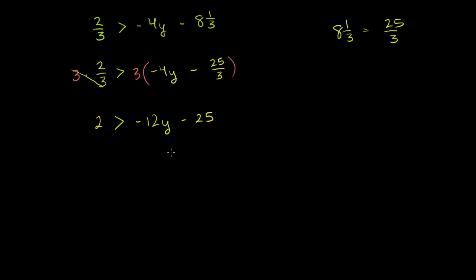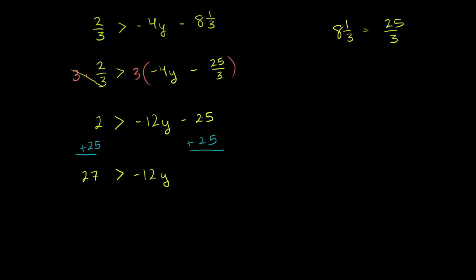Now we want to get all constant terms on one side and all variable terms on the other. The only variable here is y, and it's already on the right side, so let's move the 25 to the other side by adding 25 to both sides. On the left-hand side, 2 plus 25 is 27. We get 27 is greater than negative 12y, and the negative 25 plus 25 cancels out.